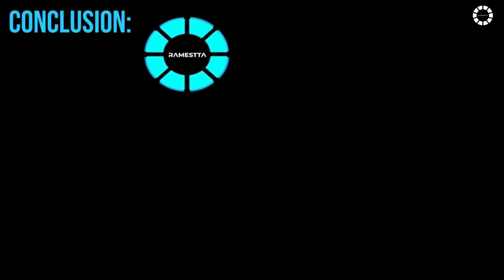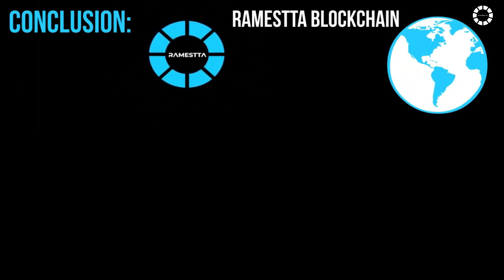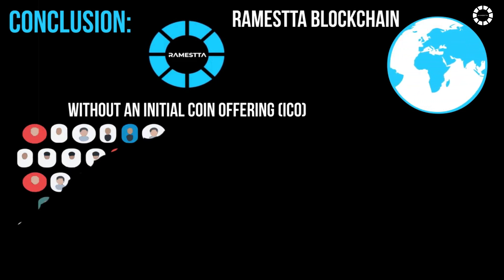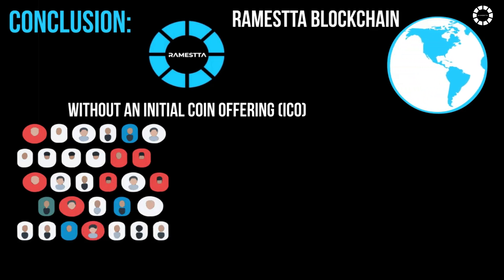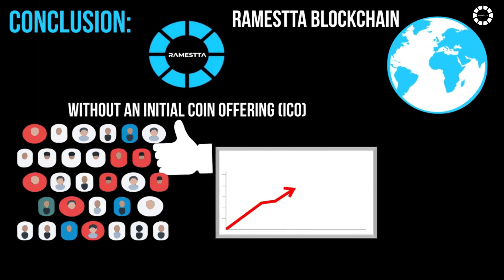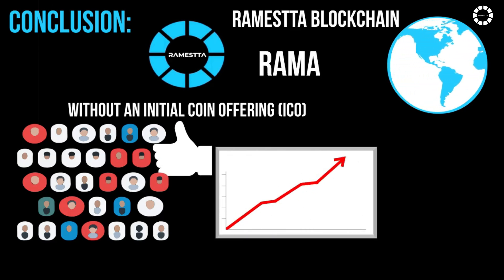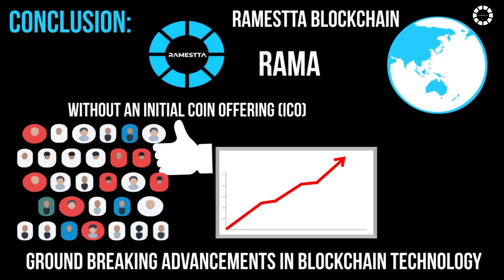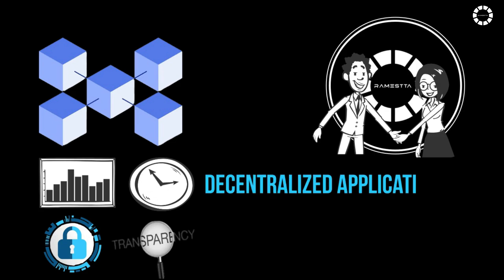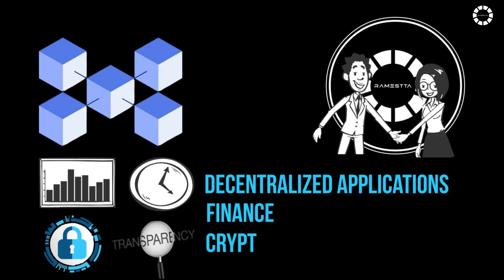Romesta blockchain stands out as the world's first blockchain developed without an initial coin offering (ICO), emphasizing its commitment to community-driven development and sustainability. This unique approach underscores Romesta's dedication to fostering organic growth and equitable access to its native token Rama, while pioneering groundbreaking advancements in blockchain technology. Join the Romesta community and embrace the transformative power of blockchain technology — with unparalleled scalability, speed, security, and transparency, Romesta offers the opportunity to shape the future of decentralized applications, finance, and cryptography.